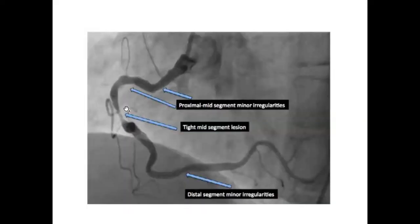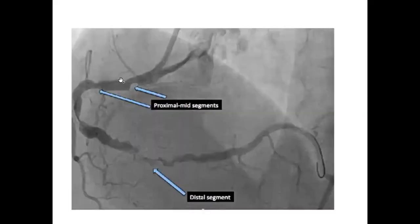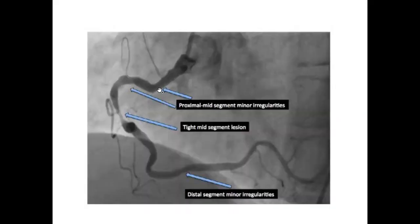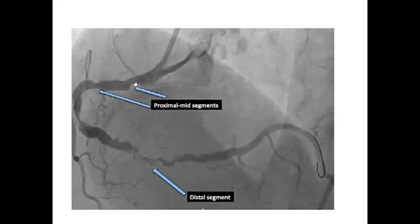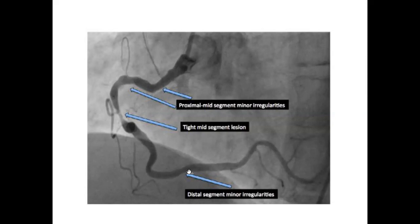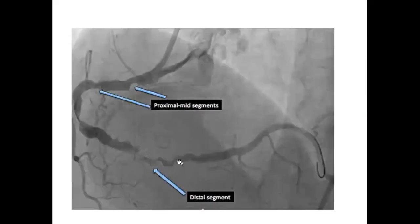This patient was planned for angioplasty, so a wire was placed. After putting the wire, you can see that straightening of the vessel has occurred. The proximal segment, which initially did not have much disease, now appears to have a lesion due to stretching and invagination of the tissue. The distal segment, which was quite normal with only mild irregularities, now shows a lot of beaded appearance and looks completely diseased — all because of the stiff wire.